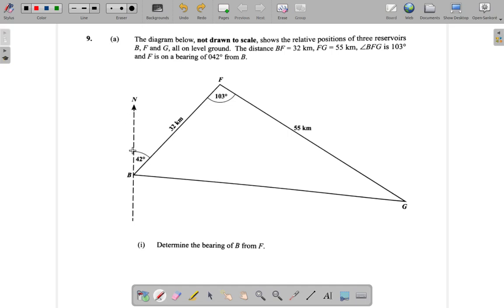This is a north line here, and it measures clockwise, going around, rotating around B. They say determine the bearing of B from F. B from F. What that means is,